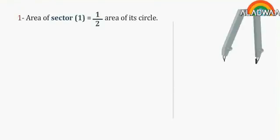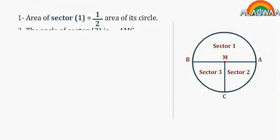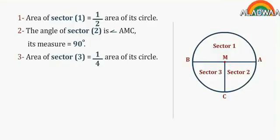Number 1: The area of sector 1 equals half the area of its circle. Number 2: The angle of sector 2 is angle AMC, its measure equals 90 degrees. Number 3: Area of sector 3 equals quarter area of its circle.